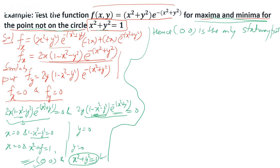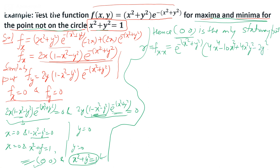Now we check for maxima or minima at (0, 0). We find fxx, which is called r — the second-order partial derivative with respect to x. We take the derivative of fx = 2x(1-x²-y²)e^(x²+y²) with respect to x, and after simplification we get: r = e^(x²+y²)(4x⁴ - 10x² + 4x²y² - 2y² + 2).